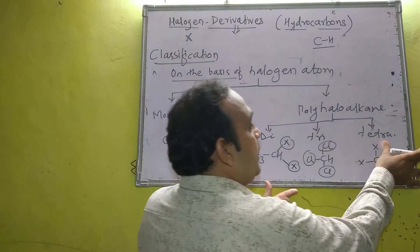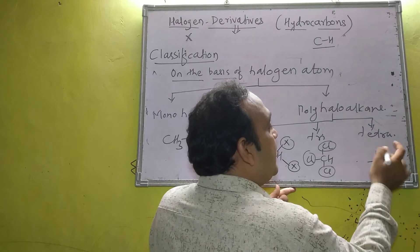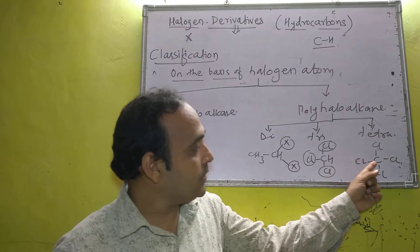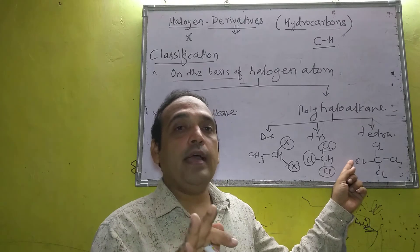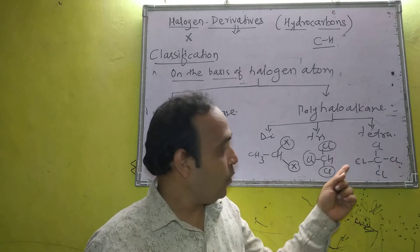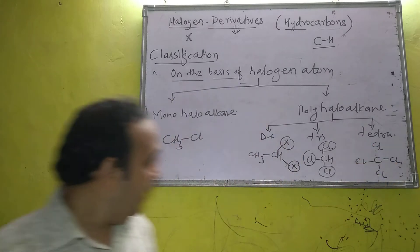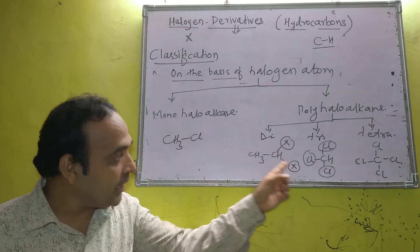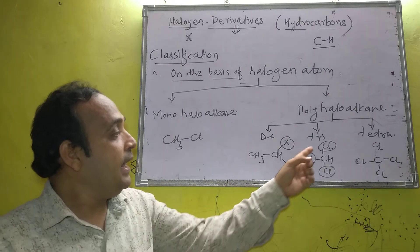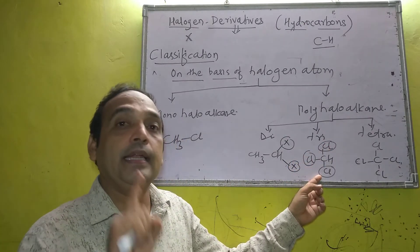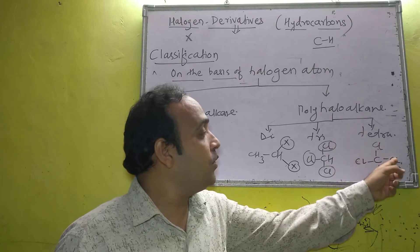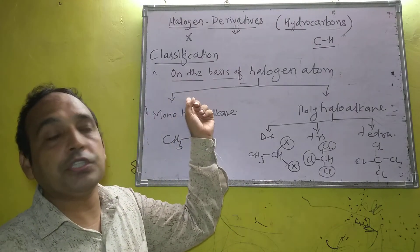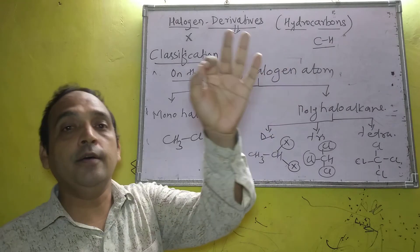To summarize: one halogen atom present — monohaloalkane; two halogen atoms — dihaloalkane; three halogen atoms — trihaloalkane; four halogen atoms — tetrahaloalkane. This is the second classification on the basis of halogen atoms present.